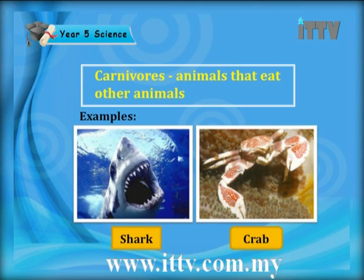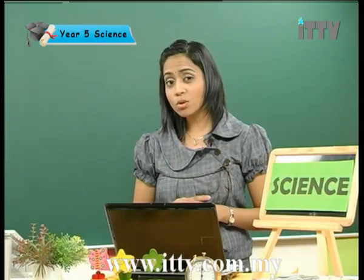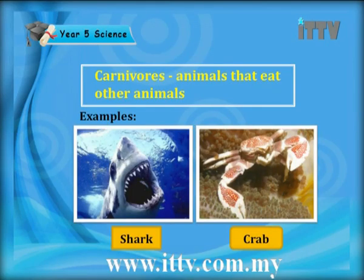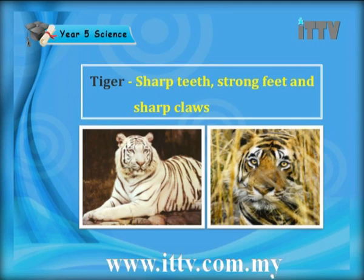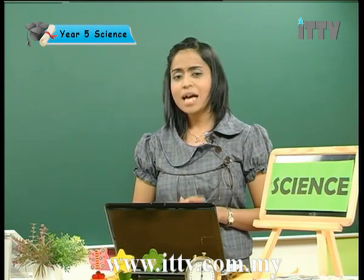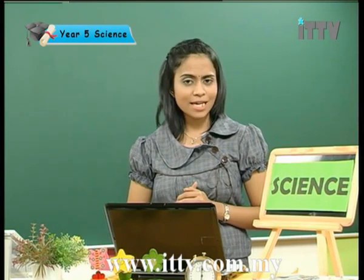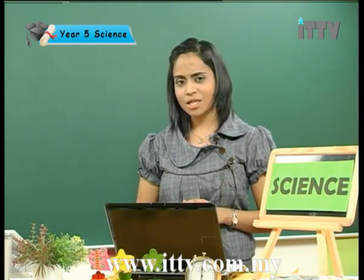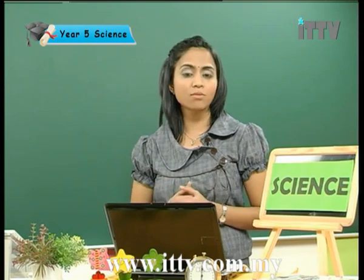Sharks, although they are known as fish, are also very dangerous carnivores. What do sharks actually feed on? On seals. And crabs are also carnivores. Now the tiger — what features do they actually have? They have strong feet and sharp claws so that they can attack their prey easily, tear them apart and eat them. All carnivores have a very good sense of hearing, sense of smell and sense of sight. All three organs are functioning very well so they can actually attack their prey easily.